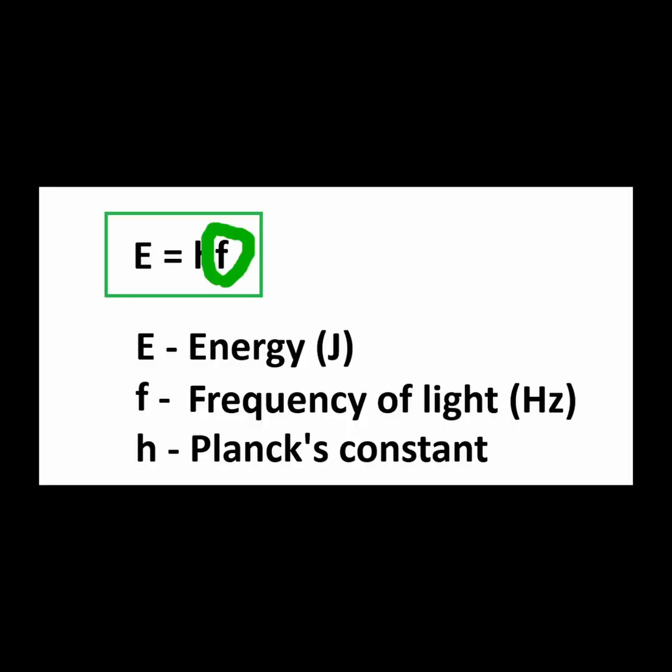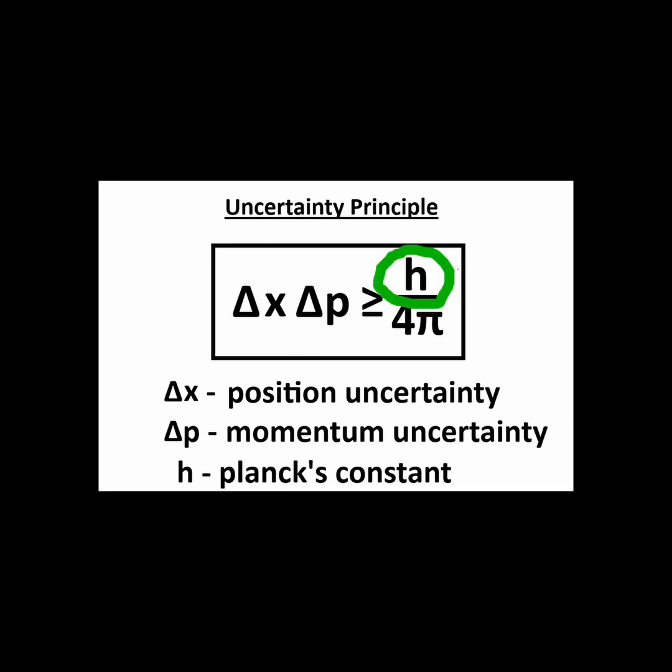This constant is rooted in the basis of quantum mechanics, linking the frequency of light to energy, and it is also found in the famous Heisenberg uncertainty principle, among many other places.